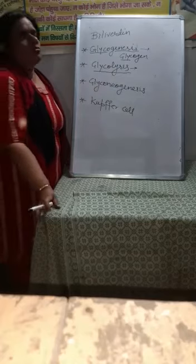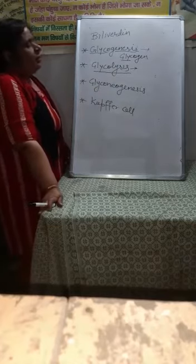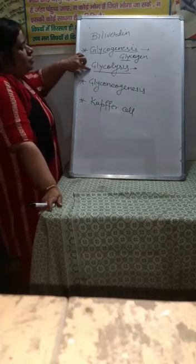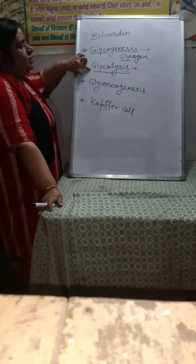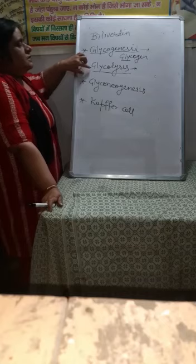Glycolysis — suppose we don't have to eat. If your body needs to maintain blood sugar level, and glycogen is stored in the liver, then the breakdown of glycogen will start. That is called glycolysis. Lysis means breakdown — glycogen breaks down to maintain blood sugar level.